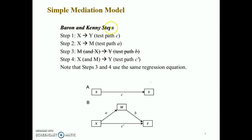As far as the Baron and Kenny steps are concerned, we need to perform three regression analyses for testing the simple mediation effect — that is, how X is affecting Y through M. In step one, we need to test the relationship between X and Y. Here we are looking for a significant effect for the C coefficient. This is also referred to as the total effect, and diagram A represents the total effect model.